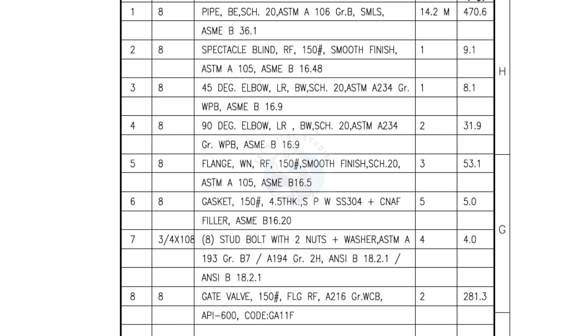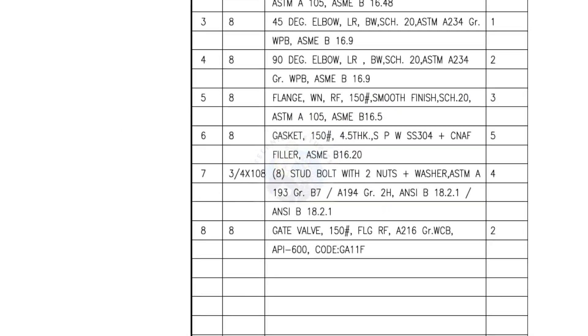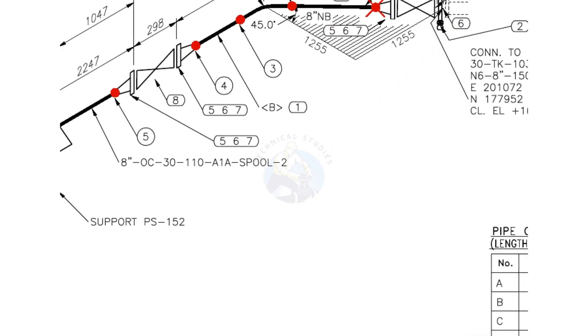How to calculate the take-off of a long radius 90 degree elbow? The formula is diameter in inches multiplied by 38.1. Let us assume the welding gap is 3 millimeters.